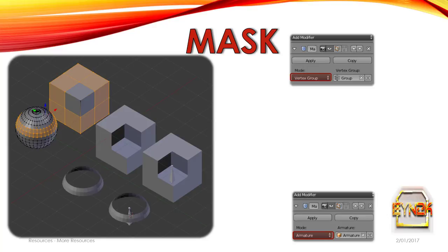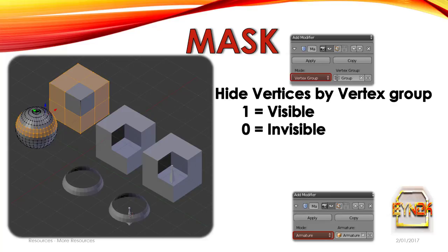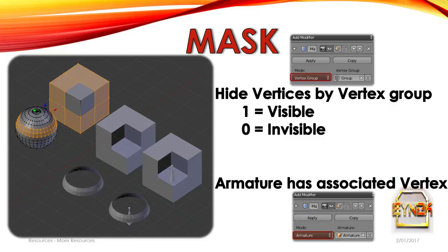Another very useful modifier I didn't appreciate until recently is the Mask Modifier. I always had trouble hiding vertices — exiting Edit Mode would cause them to reappear, and it was hard to edit the mesh inside. By masking an object we can access the inside without changing its mesh data, either temporarily or permanently. The most common approach is by vertex group, with one being visible and zero being invisible. Armatures always have vertex groups associated with them, so you can select a specific armature and hide the vertex group it's manipulating.